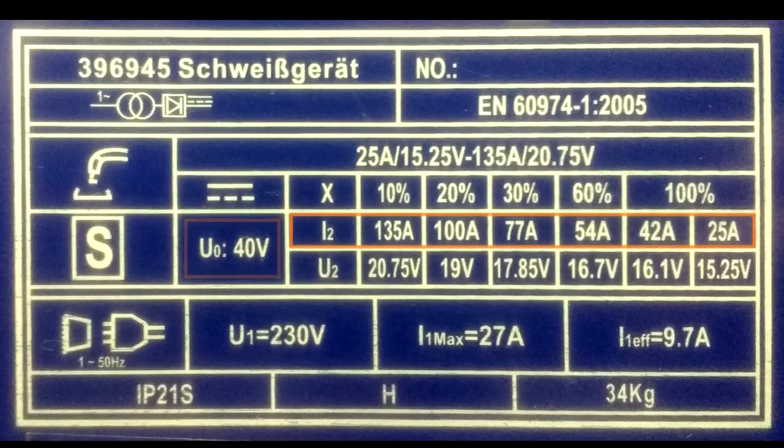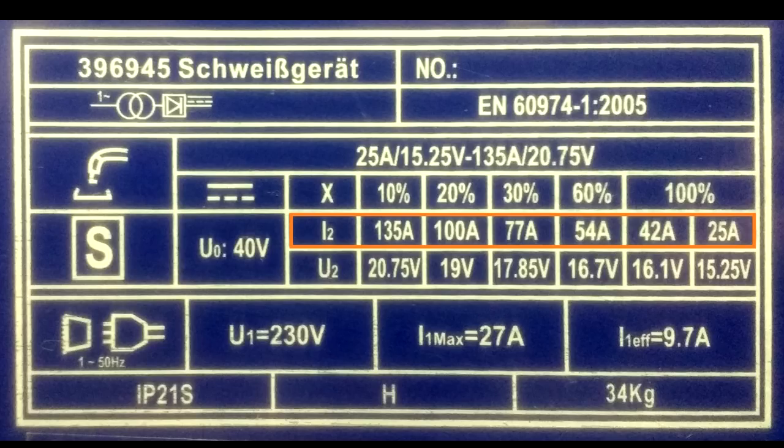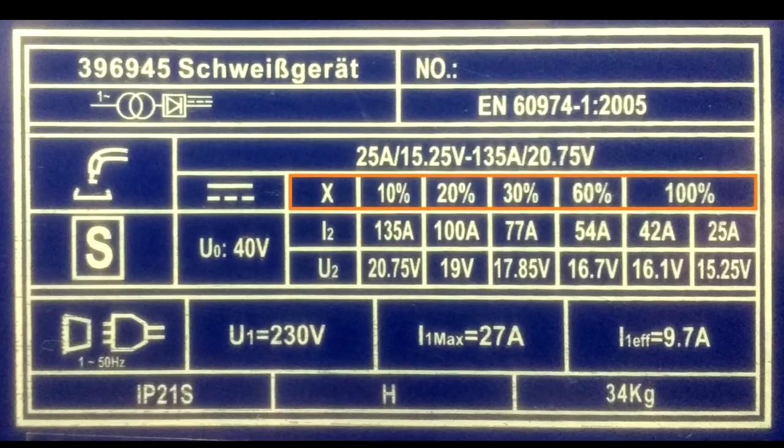And we also find a bunch of current ratings out here for the value I2. And that's the output current while welding. And the maximum value that we can see here is 135 amps. And now typically, a machine like this would be advertised as a 135 amps MIG/MAG welder. But if you see the numbers for the value x, and that means on time or duty cycle, it reads 10% here. And that means that the machine can put out 135 amps, but only for 10% of the time, or otherwise, it will just overheat and shut down. While the values for 100% are between 25 and 42 amps. So it's maybe safe to say that this is more a 30 amps MIG/MAG welder than a 135 amps MIG/MAG welder.